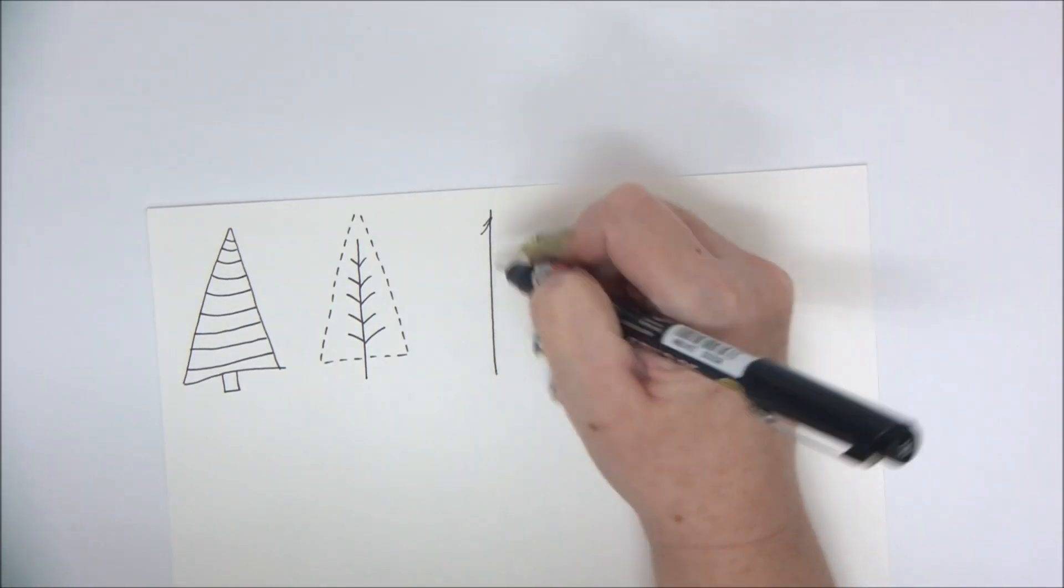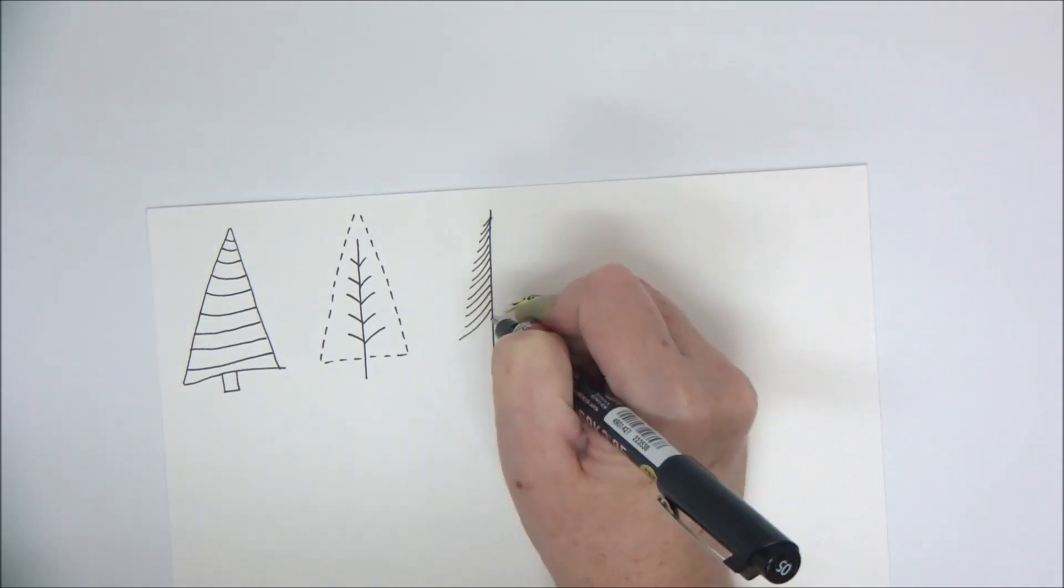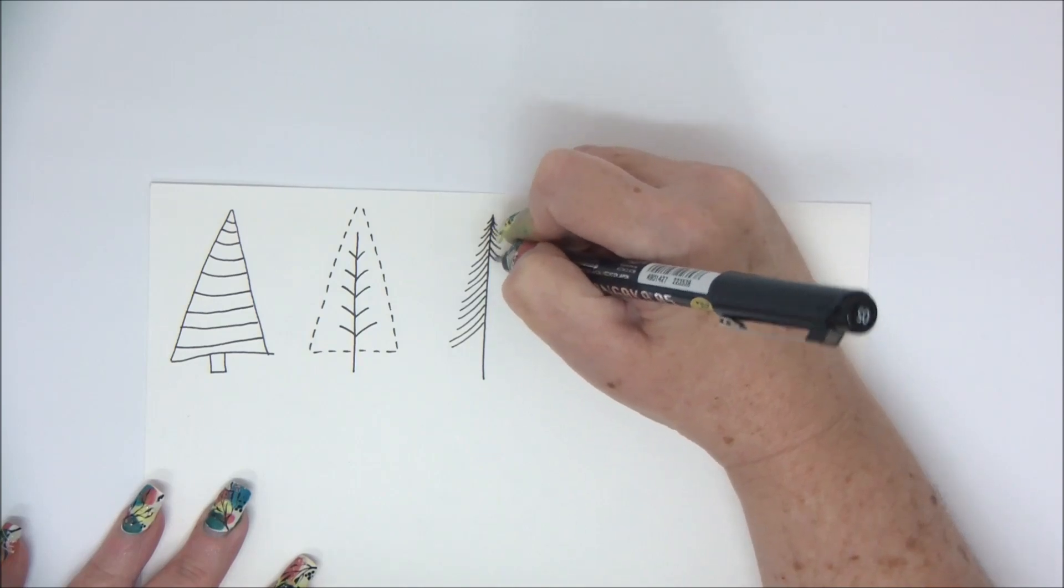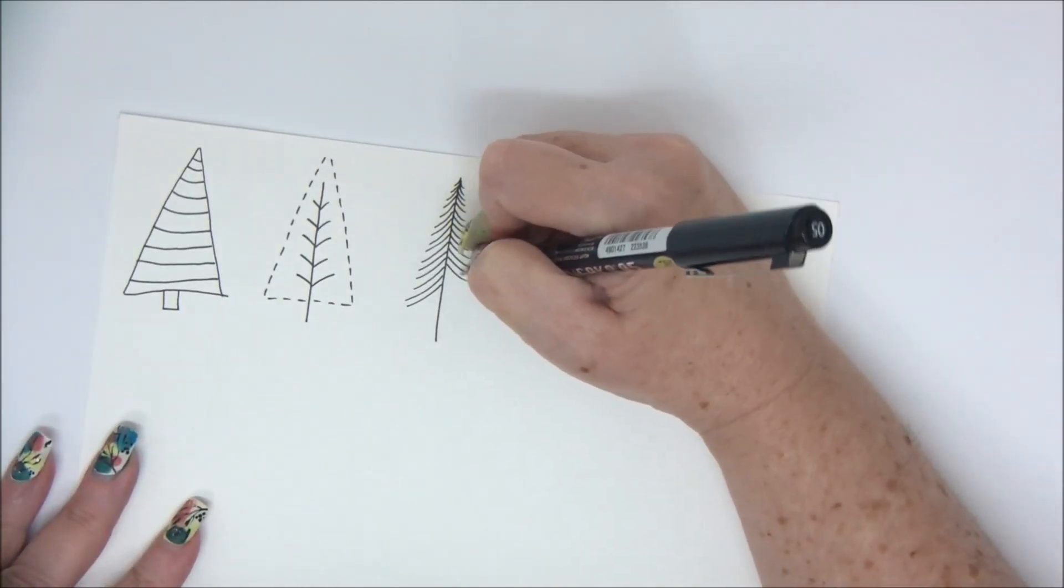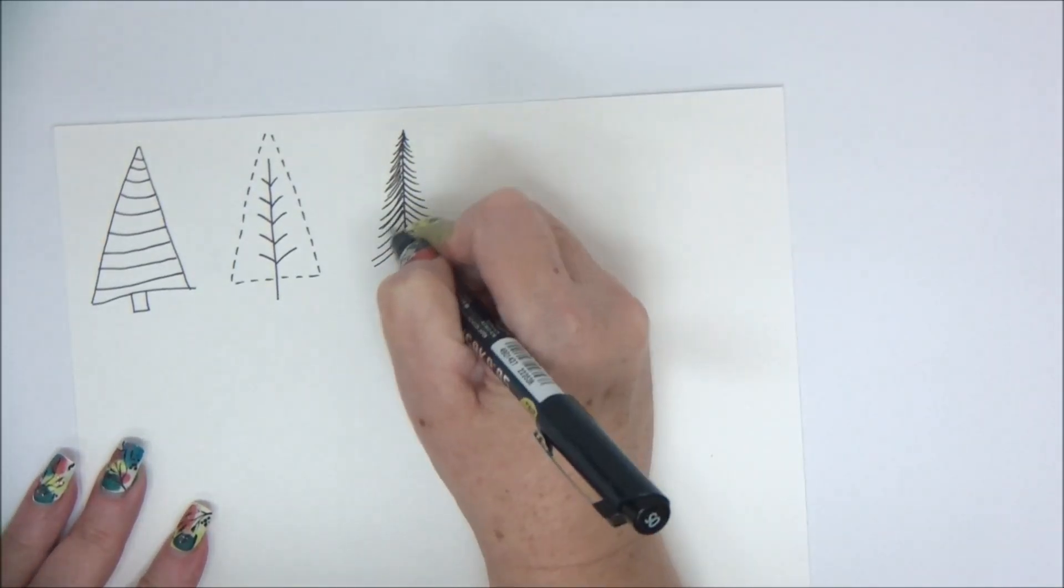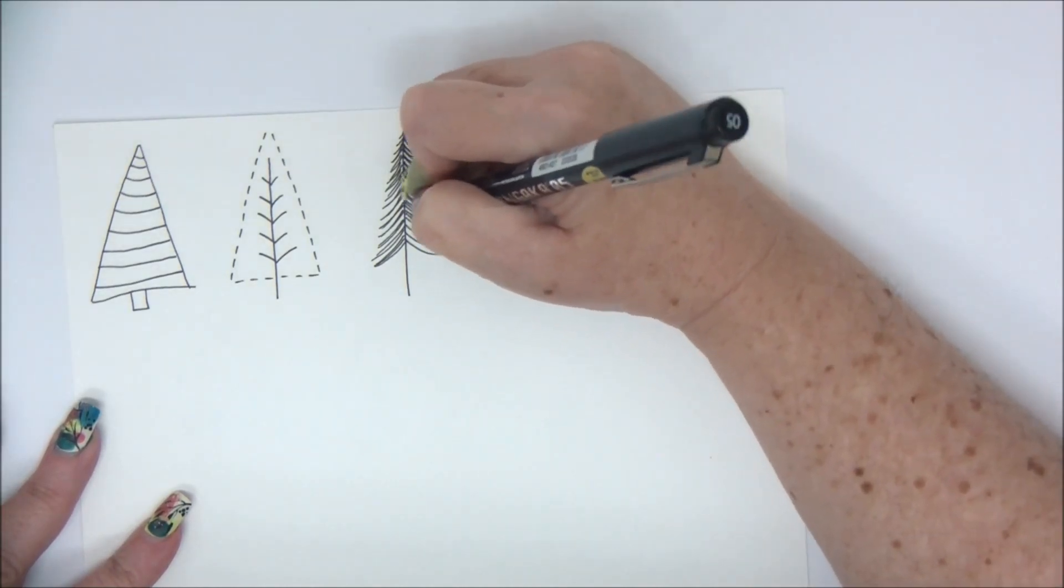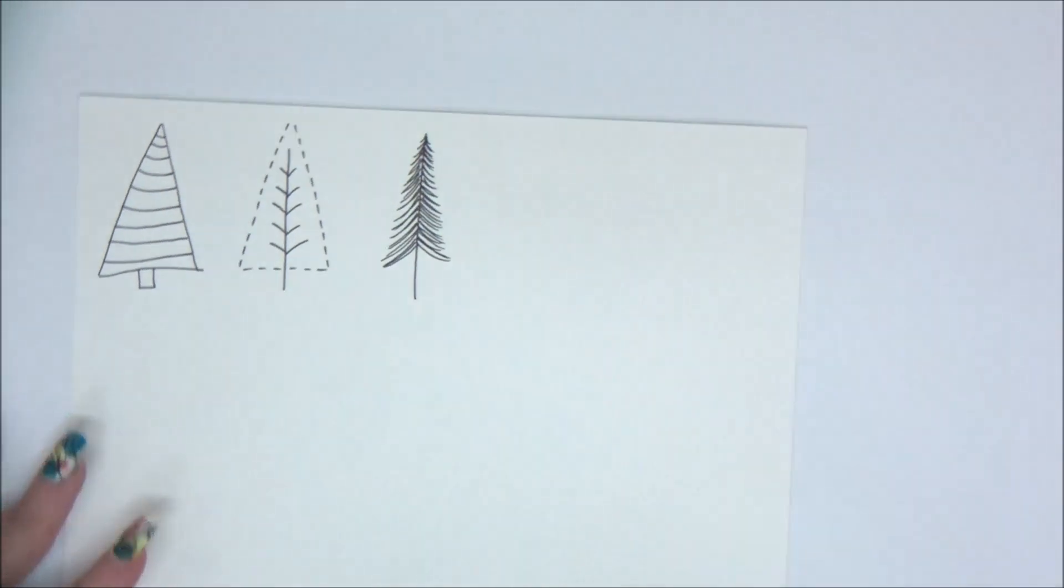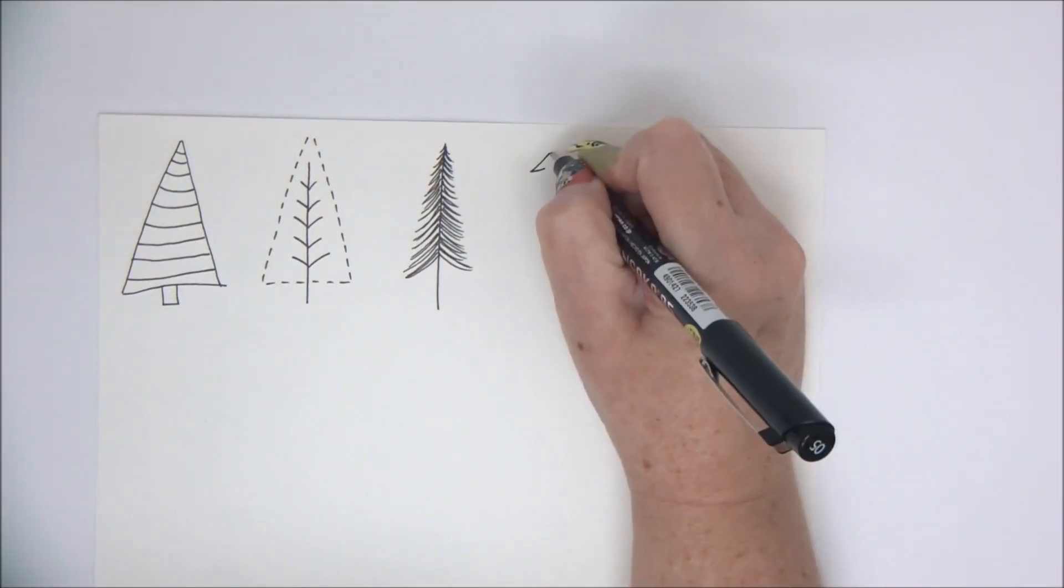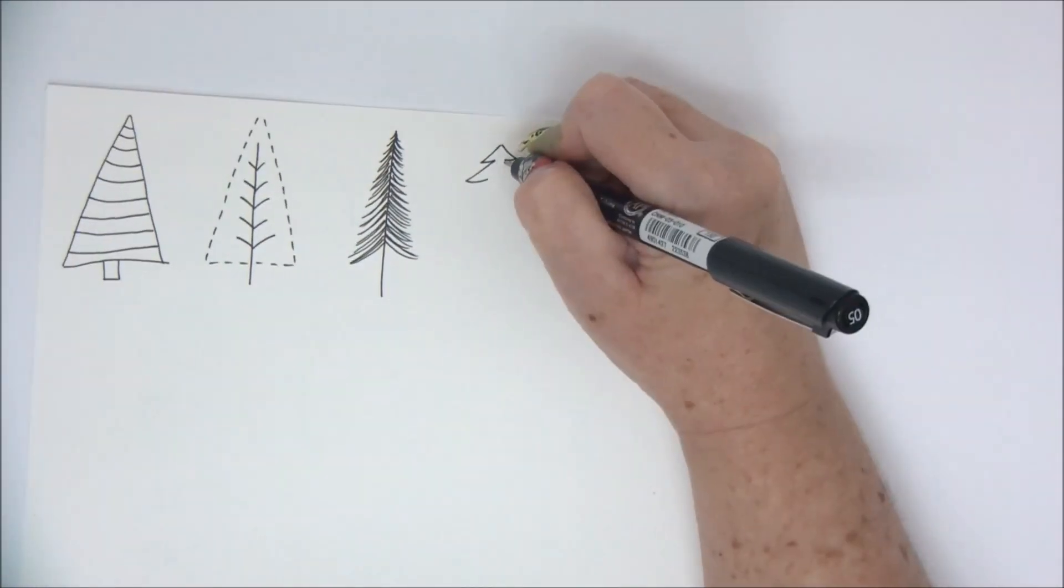Just use a regular pen to draw your Christmas trees and simply add diagonal lines with a changing length. The more you go towards the bottom, the longer the lines will be. Make them in an angle so they will look like a tree, and actually you can also make them straight—that will work too.